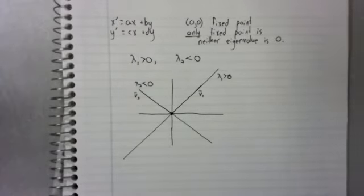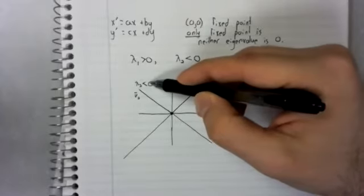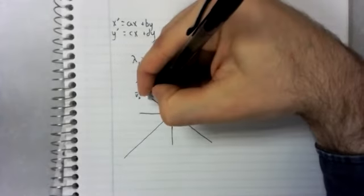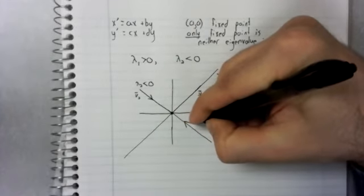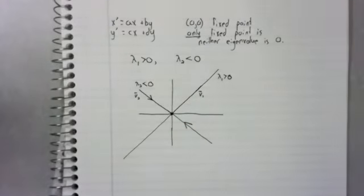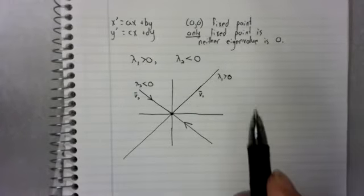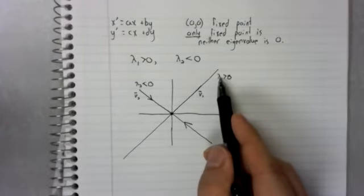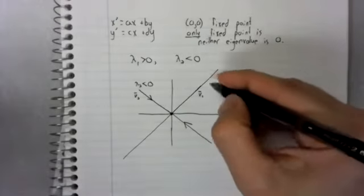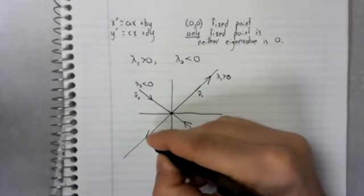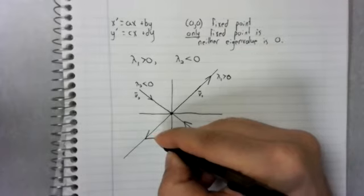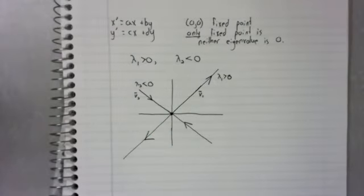If the eigenvalue is negative, then we move along the eigenvector towards the origin. If the eigenvalue is positive, we move along the eigenvector away from the origin.